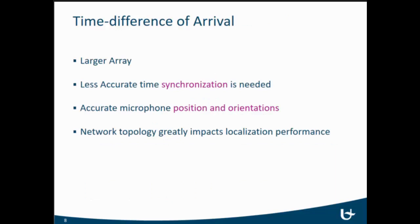To do time difference of arrival, we need a larger array. We can work with more or less accurate time synchronization depending on the small-scale arrays. We have accurate time synchronization for the large-scale arrays. We can work with less accurate time synchronization, but we still need it. We also accurately need to know the location and orientation of the microphones or the arrays. And we are very interested in the network topology because placing the nodes or the arrays at different locations will influence the performance of our localization mechanism.